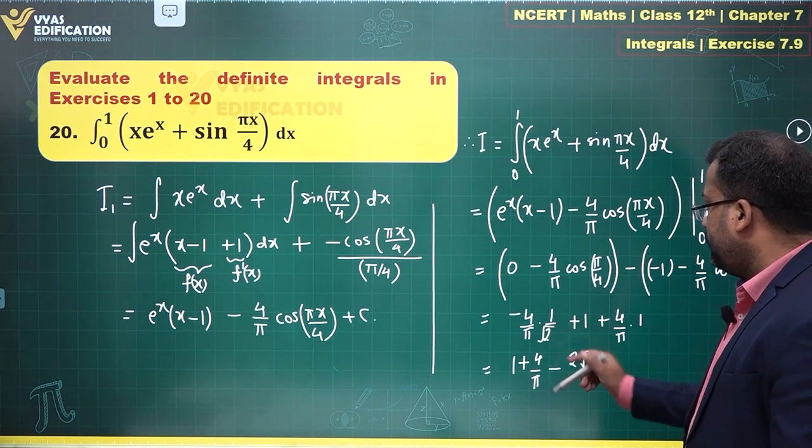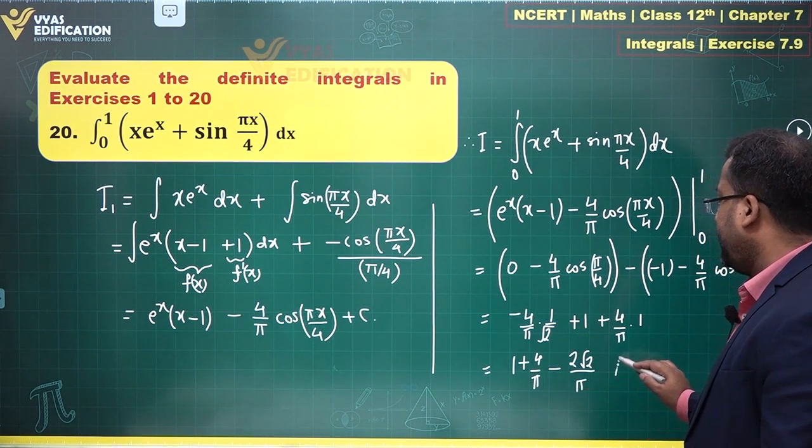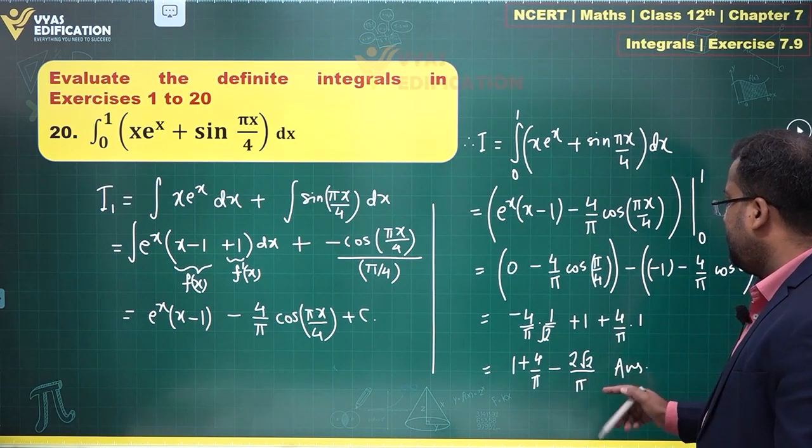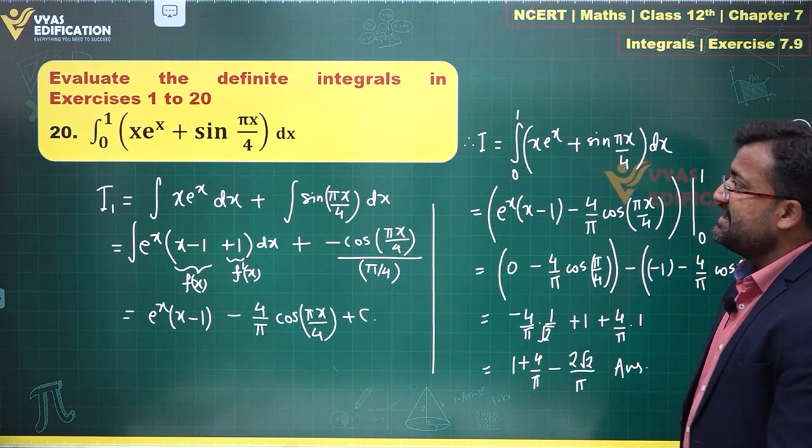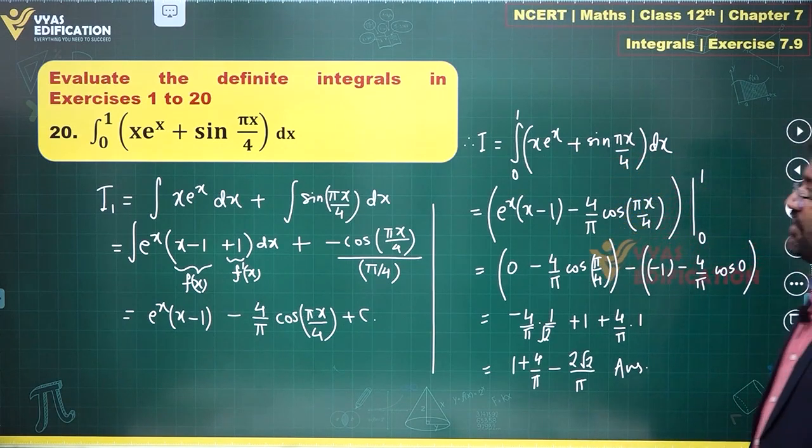4/√2 is 2√2/π - that is my required answer for this particular question number 20. As you can see, in this question, that's the complete solution of this 20th question.